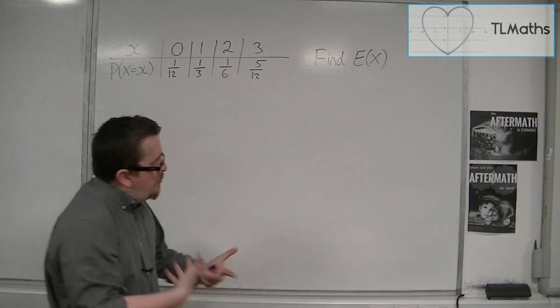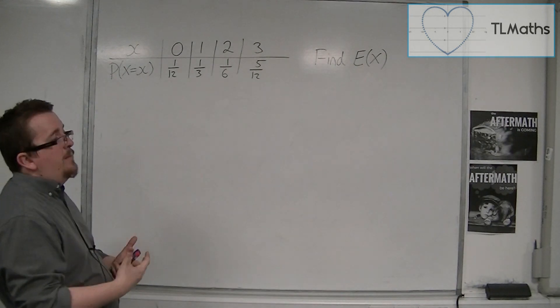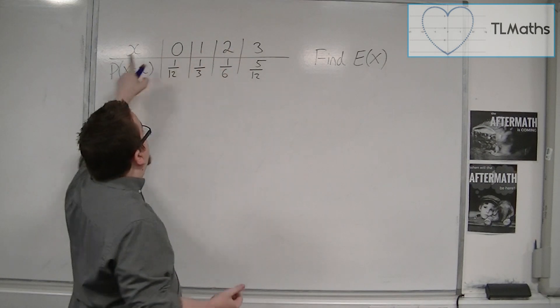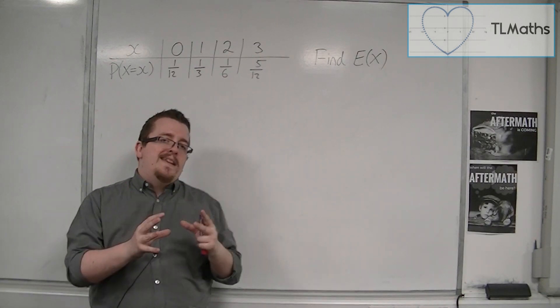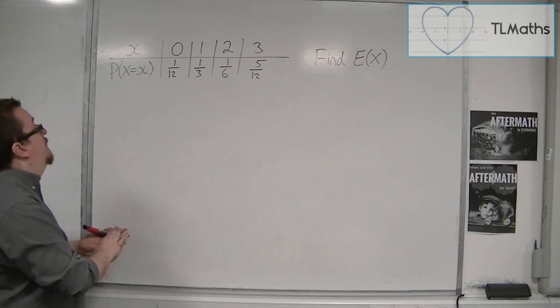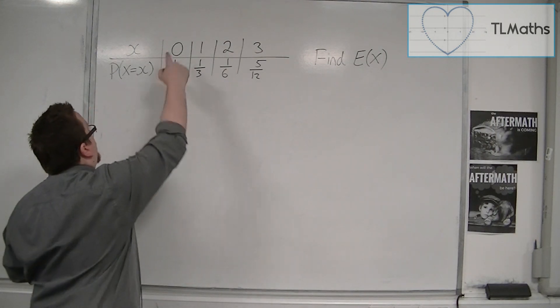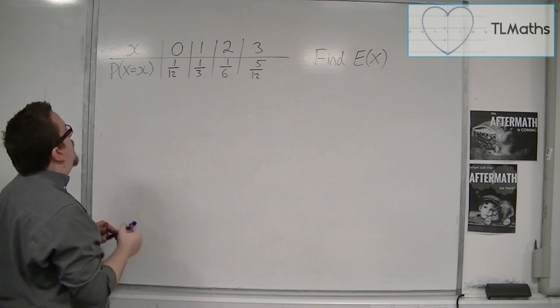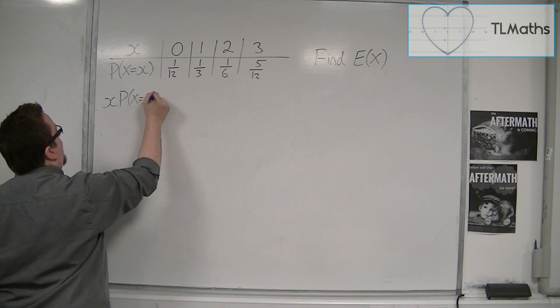The way to introduce it is to imagine that this table is a frequency table. These are your x's, and these are your frequencies. If this was a regular frequency table problem, what we would do first is multiply each of the x's by their probabilities.